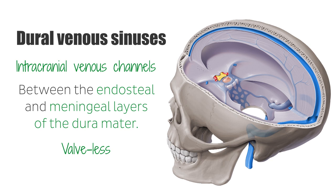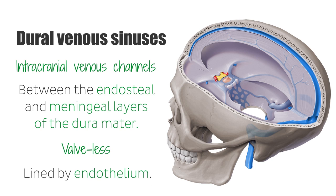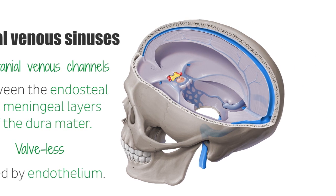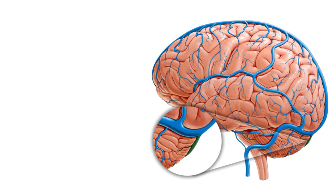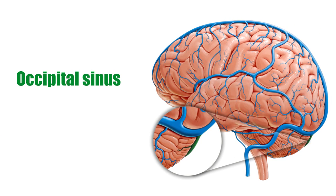The walls of the venous sinuses are lined by endothelium. There are six paired dural venous sinuses and four unpaired dural venous sinuses. The occipital sinus is one of the unpaired dural venous sinuses.